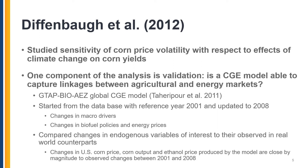The model is validated by comparing changes in endogenous variables of interest to their observed counterparts. In this validation exercise, the endogenous variables of interest are corn price, corn output, and ethanol price. Changes in these variables produced by the model on the historical simulation were close enough to those observed historically between 2001 and 2008, allowing the authors to conclude that the validation was successful and the model captures linkages between agricultural and energy markets.